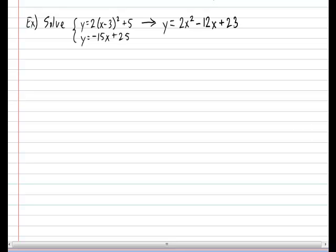Alright, now that we have it written in general form, we can go ahead and solve our semi-linear system using the comparison method. So we have 2x squared minus 12x plus 23 equal to minus 15x plus 25. So let's proceed as if we were solving any old regular second degree equation.